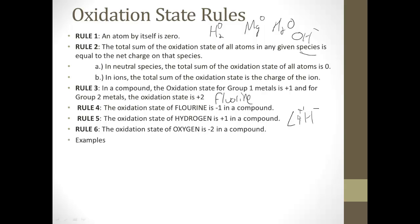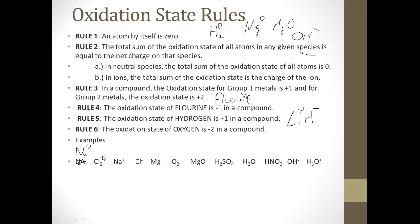All right, let's look at some examples. We're going to assign each element its own oxidation state. In example A, it's by itself, so it's zero. Cl2, by itself, zero. Na plus — well, it tells you what it is, so it's plus one. Cl minus, same deal, minus one. And the next ones are zero, zero.